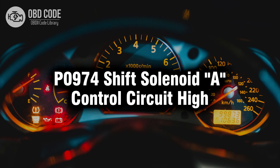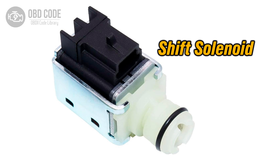Welcome. In this video we will talk about code P0974, its symptoms, causes and possible solutions. P0974 is a diagnostic trouble code indicating that there is a high voltage condition detected in the control circuit of shift solenoid A in the transmission system.